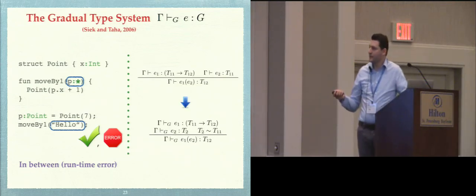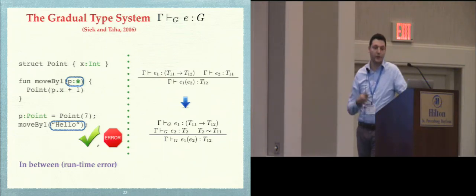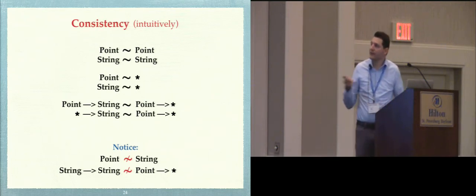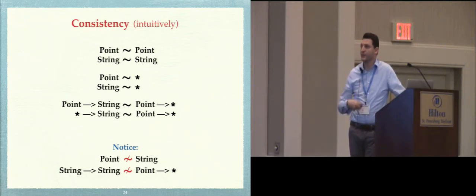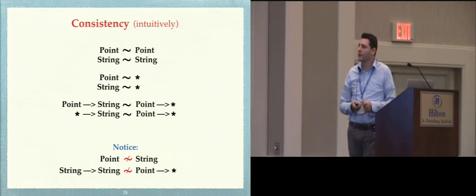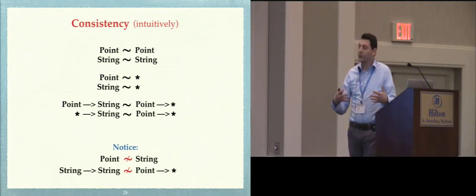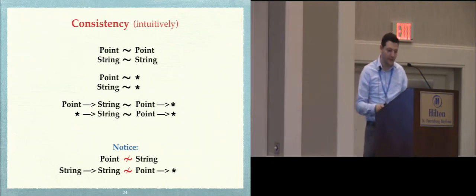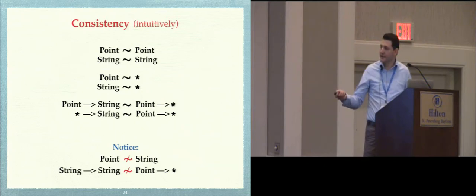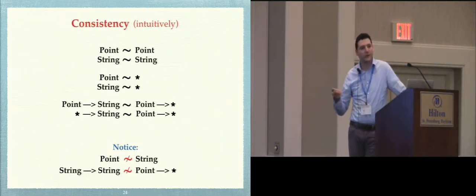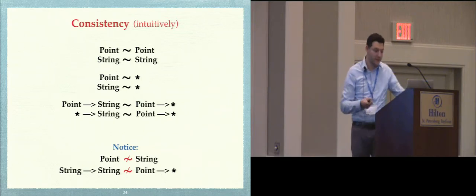We allow these two types to be different, but at compile time we have a check that they are consistent with the consistency relation. Every type is consistent with itself. Every type is consistent with the dynamic type. This lifts over to operators — two types are consistent if they are equal on the parts that are not the dynamic type. Notice that points are not consistent with strings, which is why in the previous example we rejected the program where 'move by one' asked explicitly for a point and we passed 'hello'.